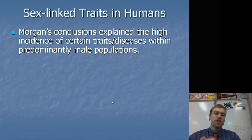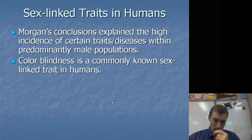Sex-linked traits in humans. Morgan's conclusion explained the high incidence of certain traits or diseases within predominantly male populations. A big example of that is colorblindness.